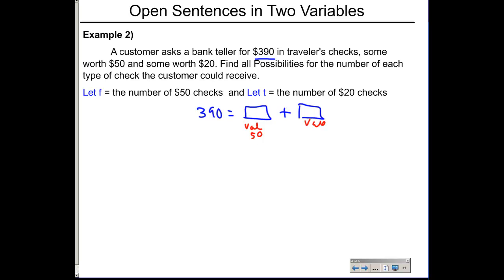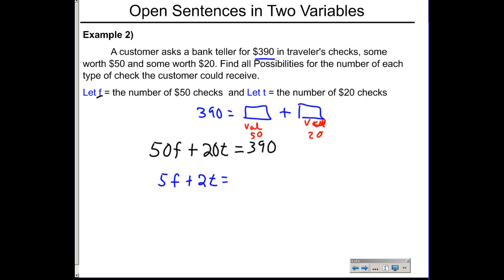We don't know how many of each, but since F is the number of $50 checks, 50 × F gives the value of the $50 checks. Adding 20 × T gives the value of the $20 checks, and the whole thing must equal $390. All terms are divisible by 10, so we simplify to: 5F + 2T = 39.